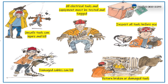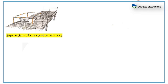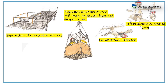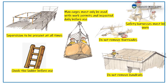Work at height: Supervision must be present at all times at work-at-height places. Man cages must be used with work permits and inspected daily before use. Do not remove barriers. Safety harness with double hook must be worn at all times while working at height or on an elevated platform. Do not remove handrails. Check the ladder before use.